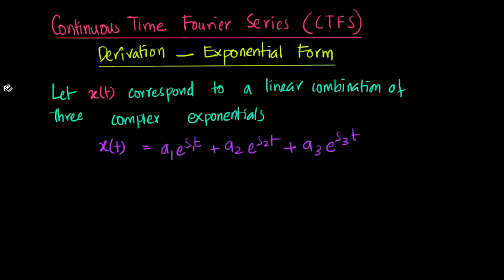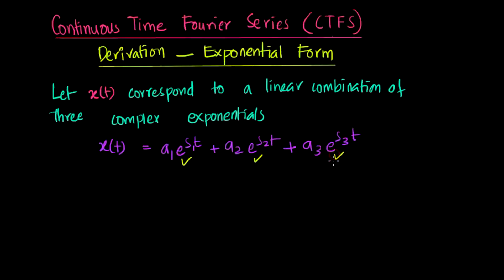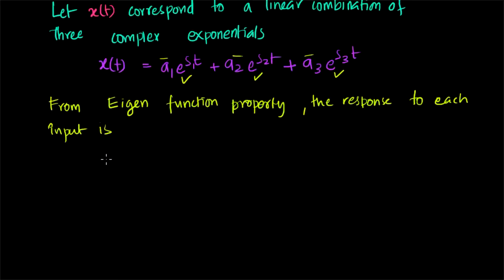Let us think that x(t) is a linear combination of three complex exponents. We can write x(t) as a1·e^(s1·t) + a2·e^(s2·t) + a3·e^(s3·t), where e^(s1·t), e^(s2·t), e^(s3·t) are the three complex exponents and a1, a2, a3 are the three coefficients of the complex exponents.